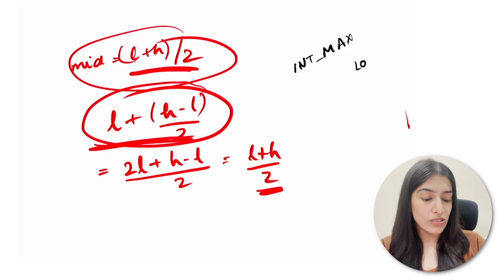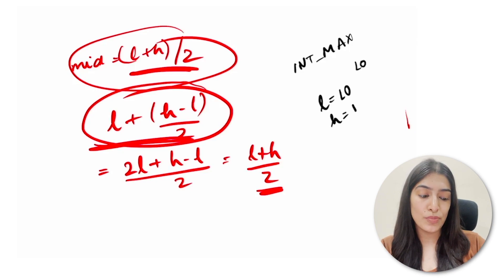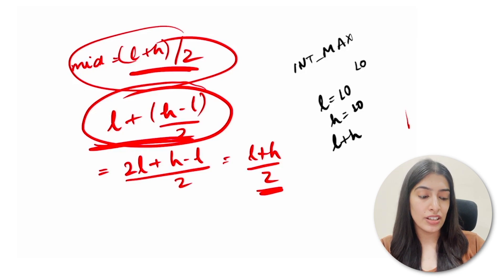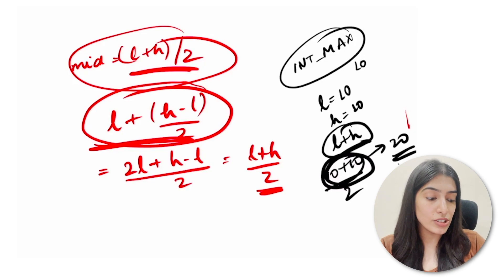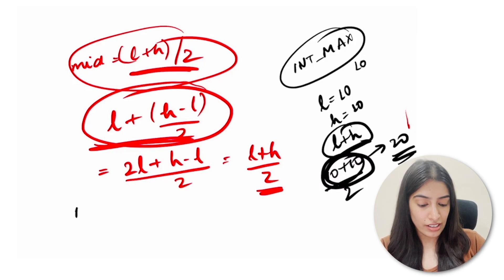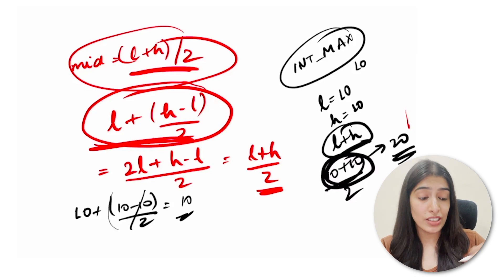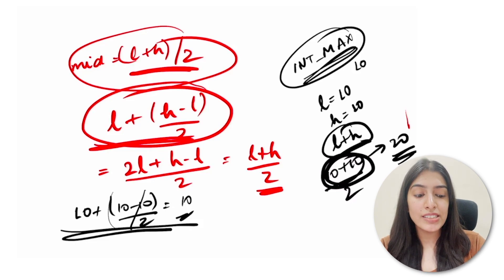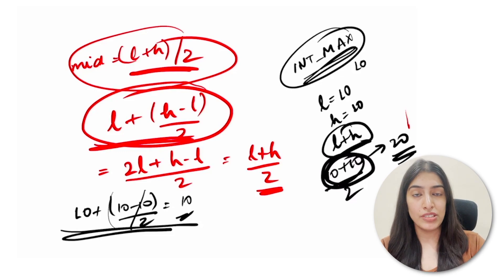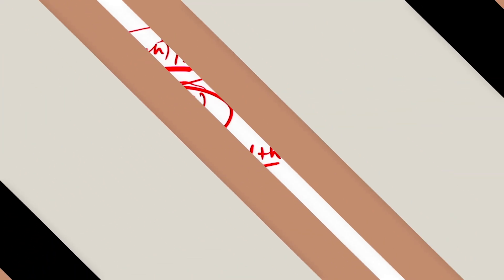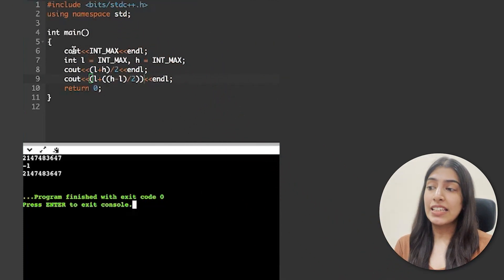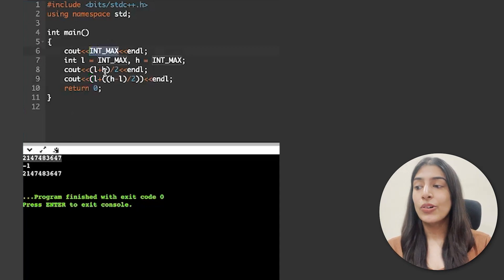Consider that integer max value is, say, 10. If l=10 and h=10, then l+h = 20, which exceeds the maximum value the compiler can handle — causing overflow. On the other hand, l + (h-l)/2 = 10 + (10-10)/2 = 10 + 0 = 10, which is correct with no overflow. I've written a short code snippet to prove this.